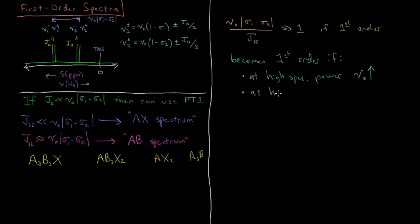It also becomes first-order at a high difference between sigma1 and sigma2. If these two protons are very far apart in the spectrum with a very large chemical shift difference, they become first-order because they're not close to each other on the spectrum and don't strongly interact in a way that goes beyond first-order perturbation theory. For example, a proton attached to a very electronegative neighbor will not be beyond first-order with a proton attached to a general alkane structure. The difference in chemical shift is directly proportional to the difference in magnetic shielding.